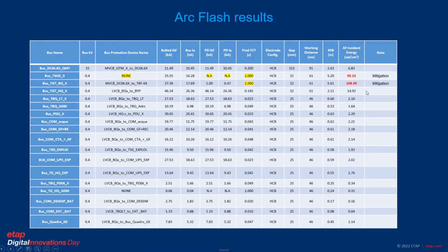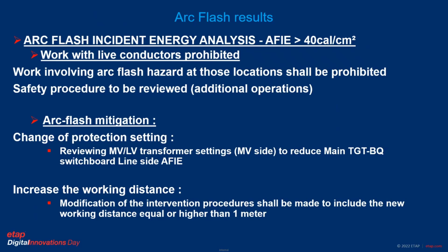The arc flash incident energy calculation output is a complete table containing, for each bus, the arc flash incident energies and arc flash boundaries. The other values are for verification to ensure understandable results. In this particular case, we identified two working places where we exceed a value of 40 calories per centimeter square — the bus of TGG and the bus of the main low-voltage switchboard BQ — where we exceed 100 calories per centimeter square. This is why mitigation is possibly required, and this is the beginning of the second step: the hazard analysis and risk evaluation.